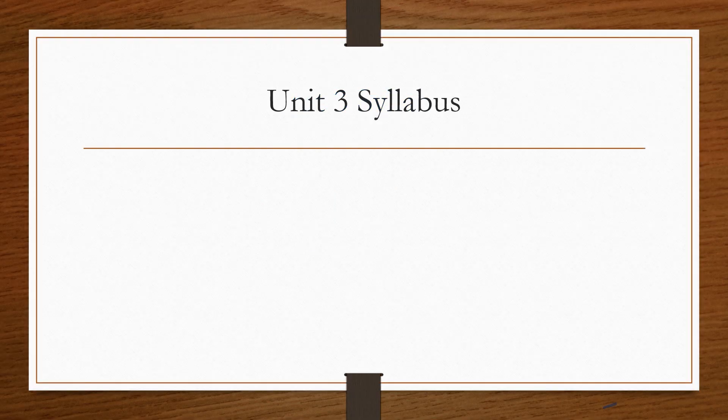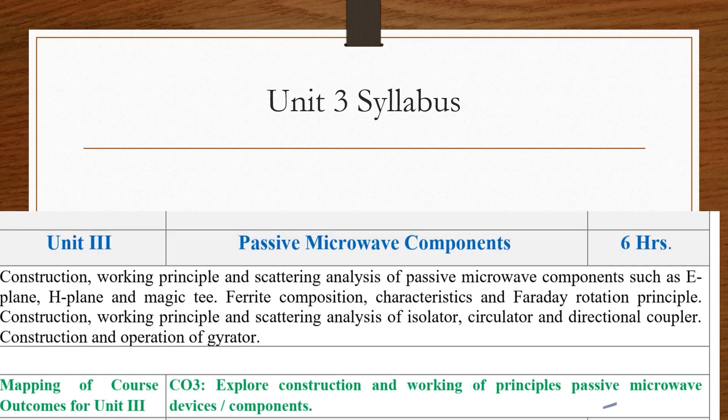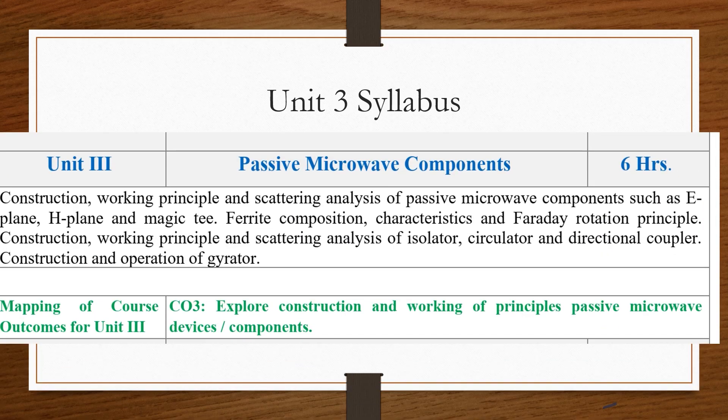For Unit 3, the syllabus is Passive Microwave Components, in that we are going to study E-Plane T, H-Plane T, Magic T, Ferrite Composite, Faraday Rotation Principle, then Isolator, Circulator and Directional Coupler.